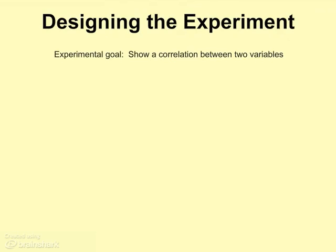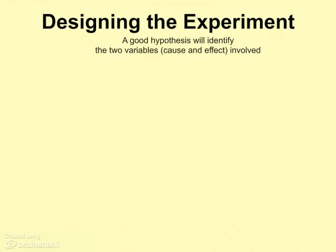When we're designing an experiment, we need to keep in mind the basic premise of experimentation — the goal of experimentation — which is to show a correlation between two events, to see if there is a cause and effect relationship between those two events. The design of a good experiment is driven by a good hypothesis that identifies the cause and effect relationship being investigated.